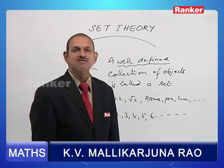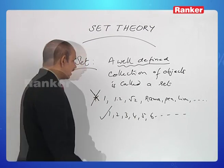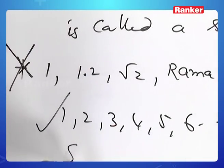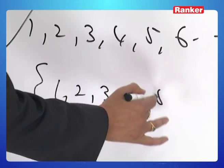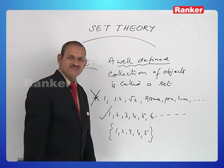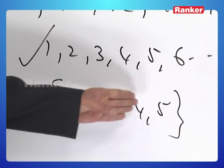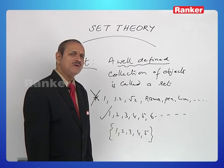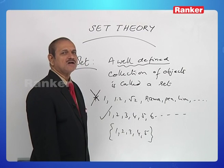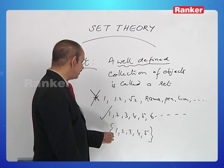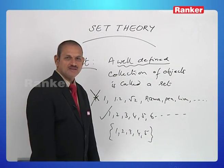Such well-defined collections are, of course, called sets. We shall usually represent a set within curly brackets: {1, 2, 3, 4, 5}. This is a set containing five objects: 1, 2, 3, 4, 5. The objects of a set are called elements of the set. There are five elements in this set.